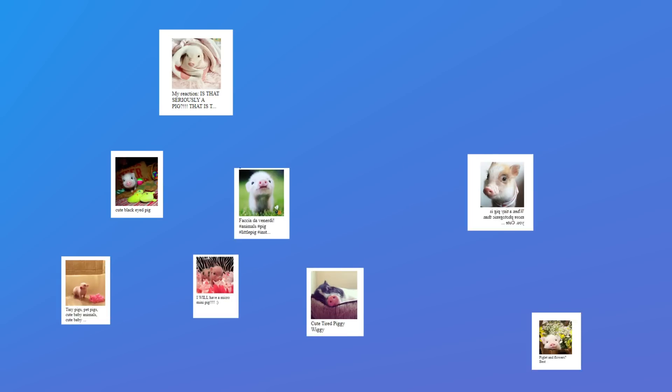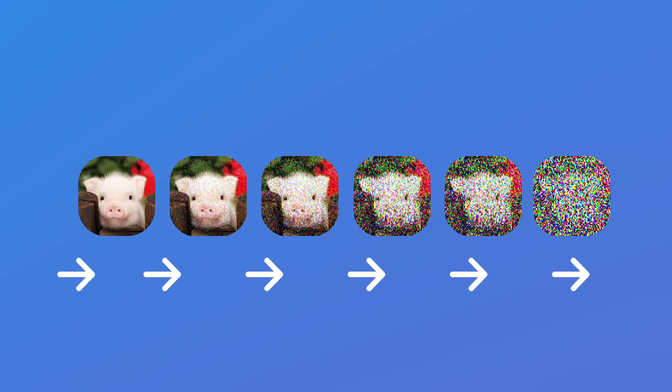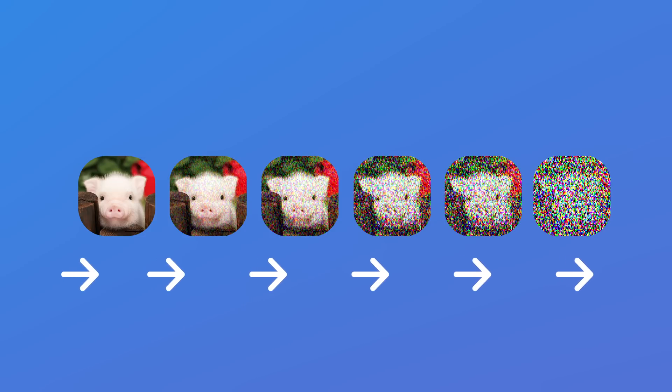Step one: take billions of images on the internet with the text description of what's on the image. The system learns how each image is encoded and how its corresponding label looks like in a mathematical representation called an embedding. Step two: take billions of images and slowly add noise to the images — basically lower the quality — adding a little bit of noise every time, around a thousand times.